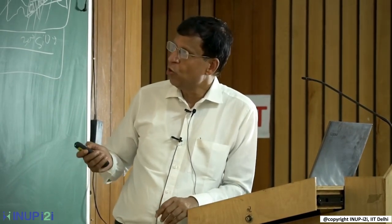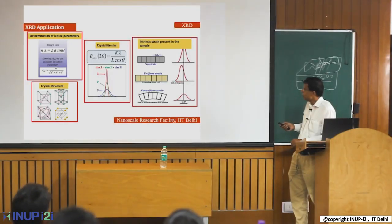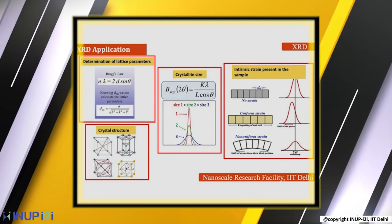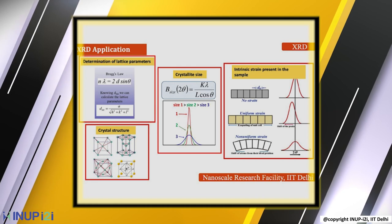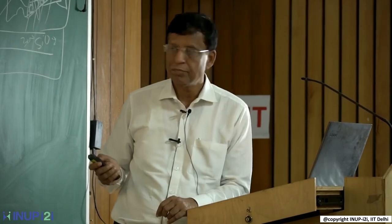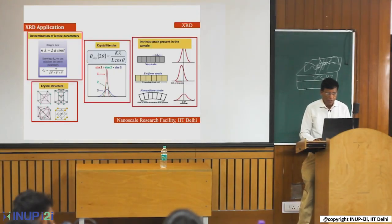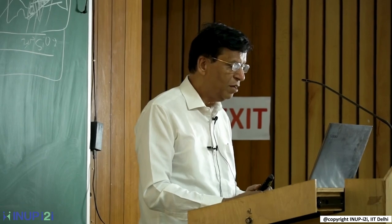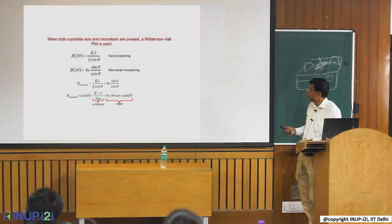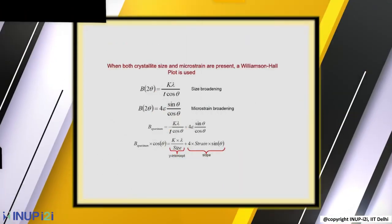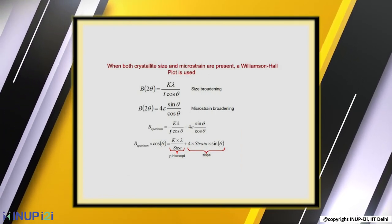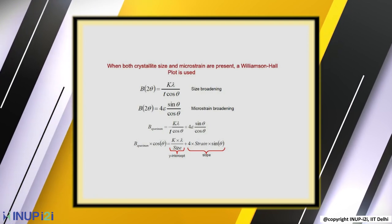A shift in the XRD peak can also tell you what kind of strain is present — uniform strain or non-uniform strain. The Williamson-Hall method involves fitting all XRD peaks together so that in one go you can find out both the strain and the crystallite size. I can discuss this in more detail tomorrow if you are interested.